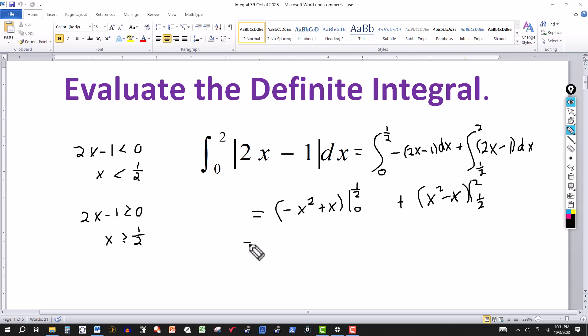Okay so we evaluate each one. The first one from 0 to 1 half, put 1 half where the x is. So that'll be minus 1 fourth plus 1 half, minus the value at x equals 0, but that just gives me 0. So let's combine those two values. Multiply by 2, that'll be 2 over 4, minus 1 fourth is 1 fourth.